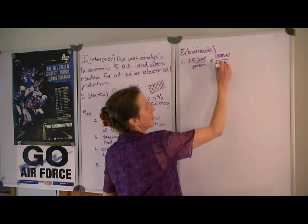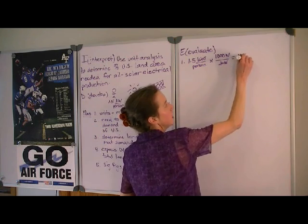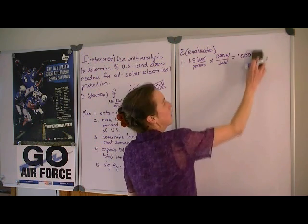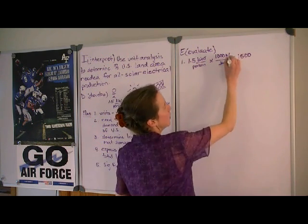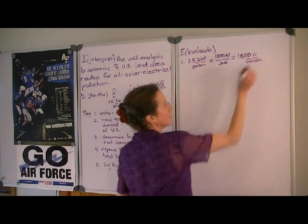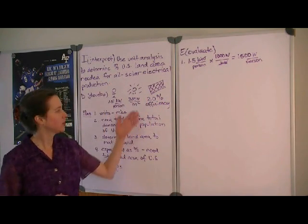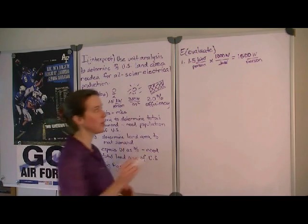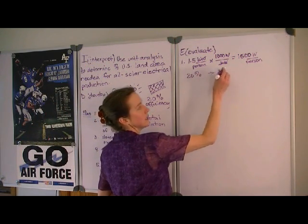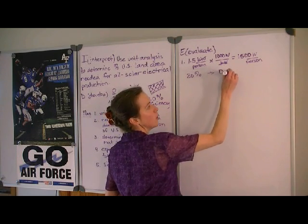So kilowatts cancels with kilowatts and we get 1,500 watts per person. And you may not consider this unit conversion, but let's make a note that 20 percent efficiency can be expressed in decimal form as 0.20.